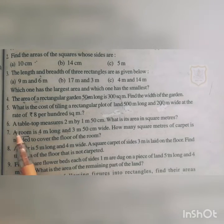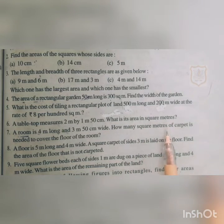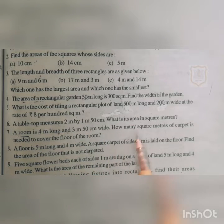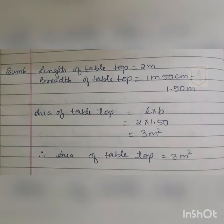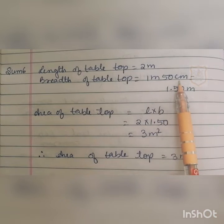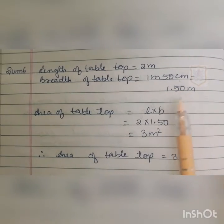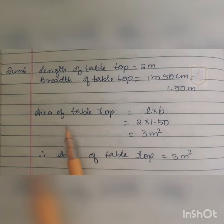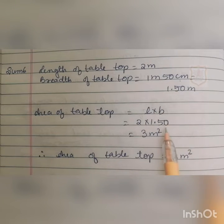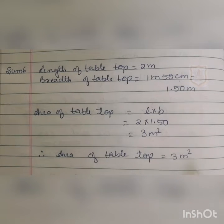Question number 6: A table top measures 2 meters by 1 meter 50 centimeters. What is the area in square meters? The length is 2 meters and the breadth is 1 meter 50 centimeters. We convert 1 meter 50 cm to 1.50 meters. The area of the table top is L × B, that is 2 × 1.5, which equals 3 square meters.